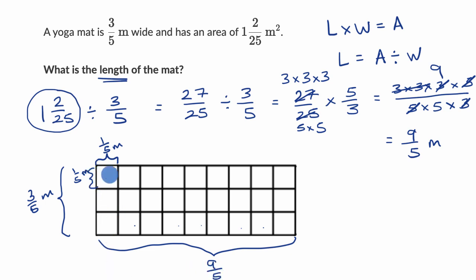Now, each of these units, what is its area? Well, it is one-twenty-fifth meter squared. And how many of these do we have? Well, we can see we have three rows of nine, which is 27 of these twenty-fifths. So we're going to have 27 twenty-fifths square meters, which is the same thing as one and two-twenty-fifths square meters.